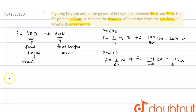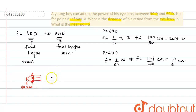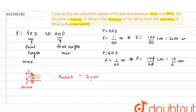As the far point is at infinity, parallel rays coming from infinity are focused at the focal point F. Since the eye is in a fully relaxed condition, the rays are focused at the retina. Therefore the distance of the retina from the lens equals this focal length, which is 2 centimeter.